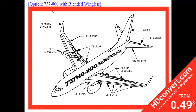This picture shows the Boeing 737-800, giving an idea about all flying control surfaces available on that aircraft. It is a combination of primary, secondary, and auxiliary controls.